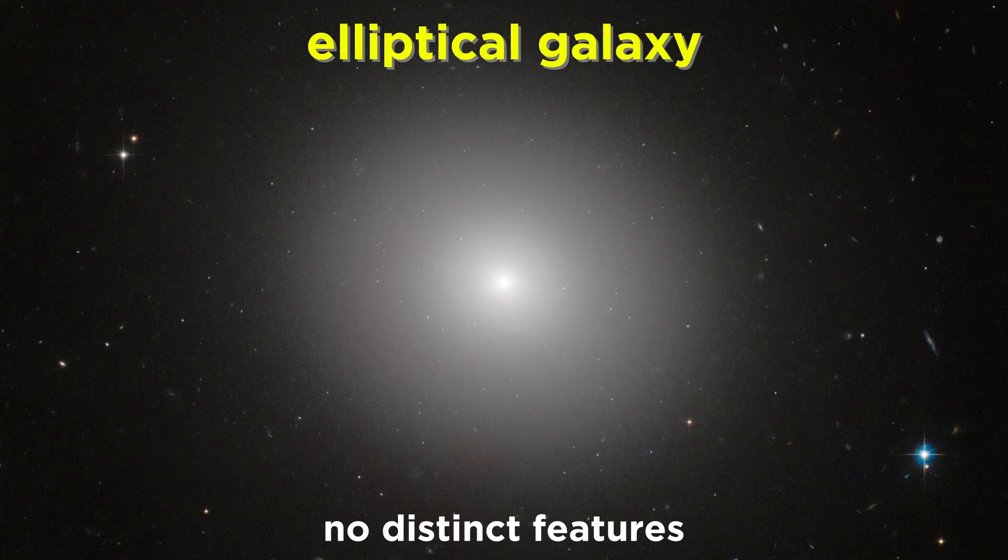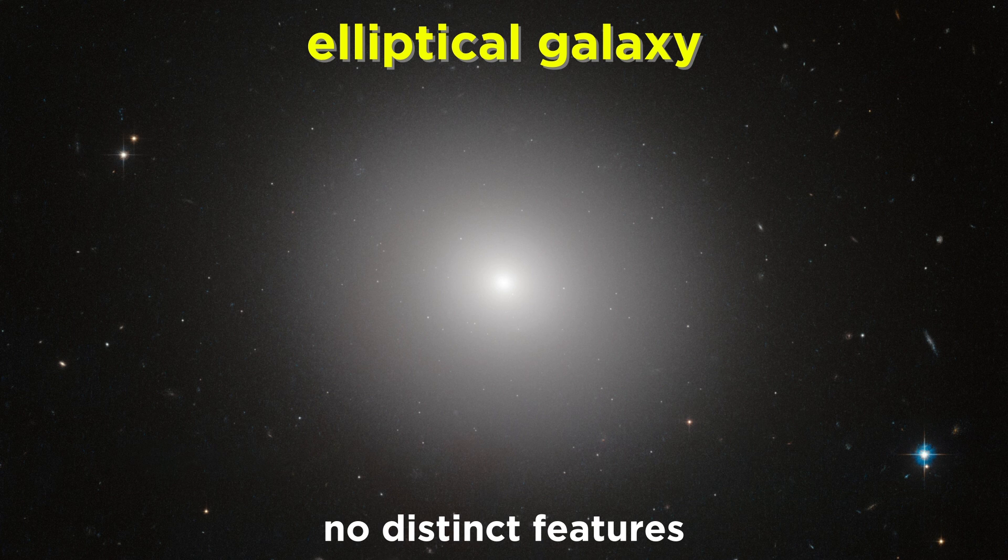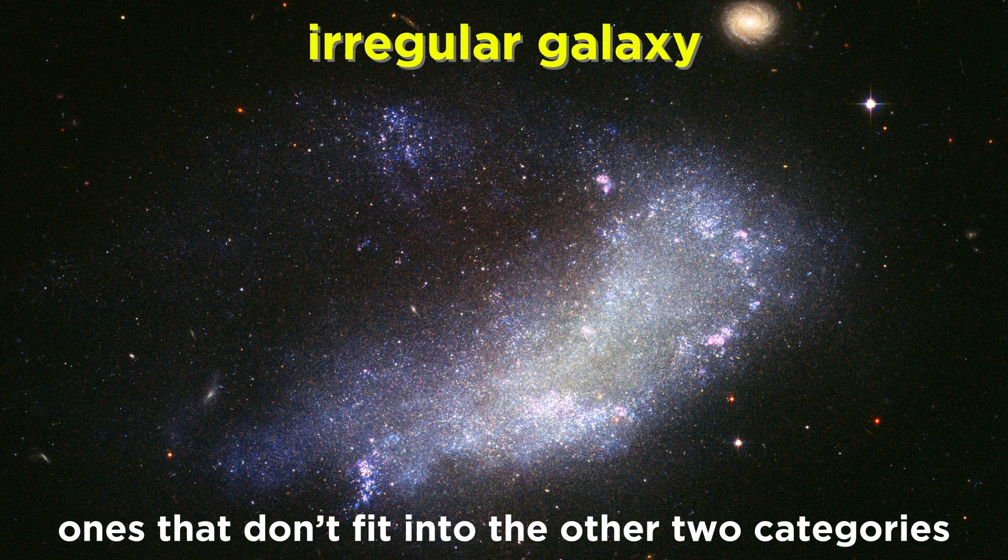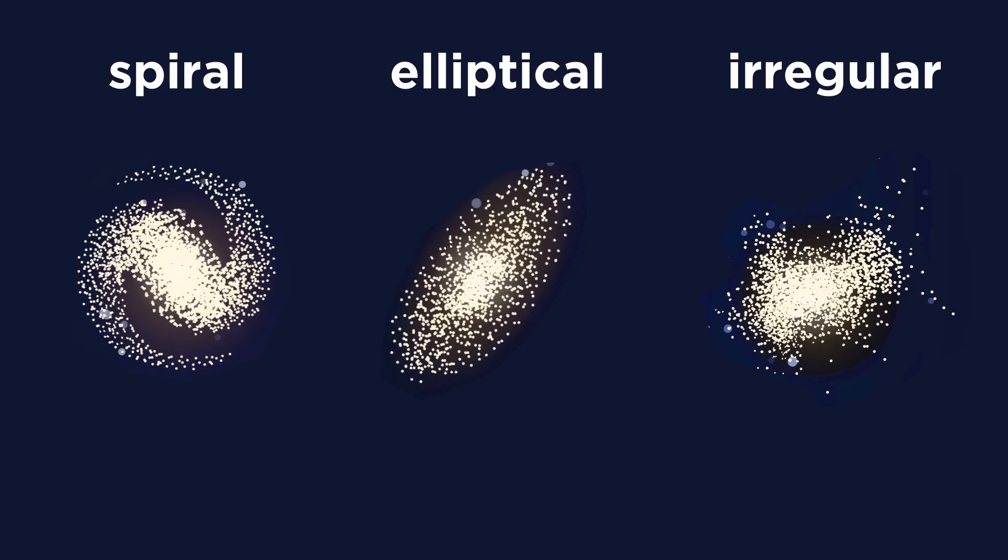Some are called elliptical galaxies, which are rather smooth, having no distinct features like a spiral galaxy does. And lastly, some are called irregular galaxies, and these are ones that don't really fit into the other two categories. So these are the three main categories for galaxies, which we can abbreviate as S, E, and IRR.